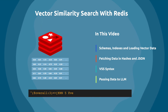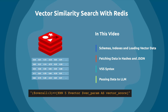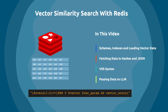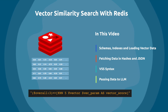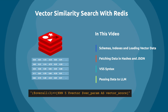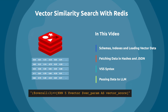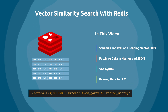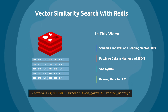Then I'm going to cover vector similarity search syntax. I'll show you how to fetch the data either from a hash or from JSON and how you deal with multi-dimensional vector data. Finally, I'm going to show you how you pass this data to a large language model with LangChain, and this gives you everything you need to build custom chains and agents from scratch.